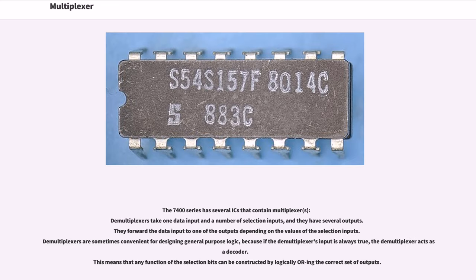The 7400 series has several ICs that contain multiplexer. Demultiplexers take one data input and a number of selection inputs, and they have several outputs. They forward the data input to one of the outputs depending on the values of the selection inputs.